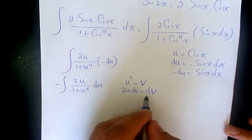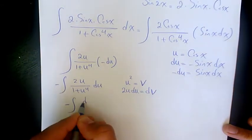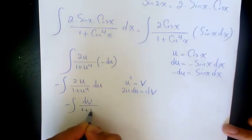And then 2u du is going to be dv, so it's going to be dv divided by 1 plus v squared.